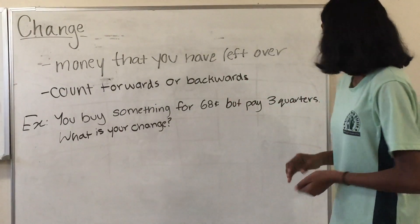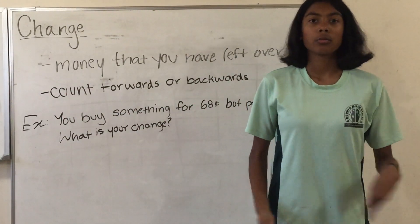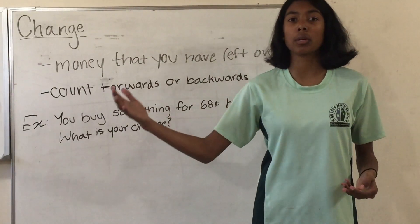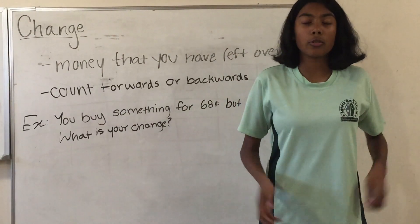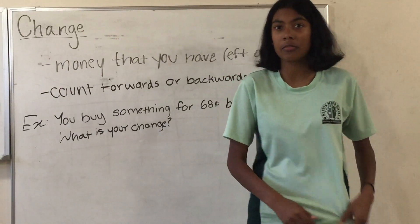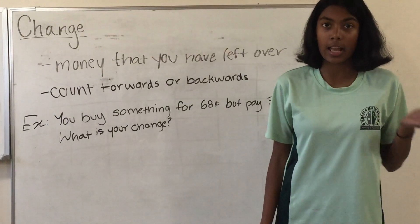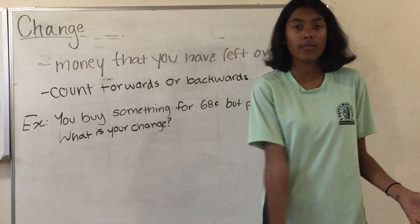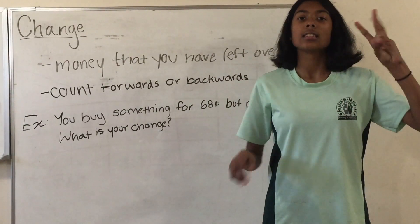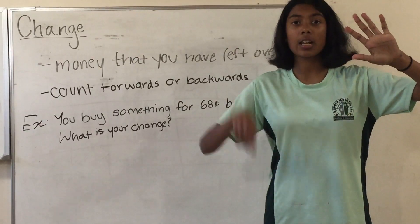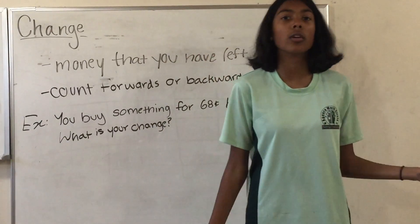Back to the problem. Let's try counting forwards first. What it means is we count from how much we had to pay to how much we actually paid, to see how many coins are in between. So let's count from 68 to 75 — and we know it's 75 because each quarter is 25 cents and there are three of them, so 25 times 3 is 75. So we have 69, 70, 71, 72, 73, 74, and 75. That means we get 7 cents change back.